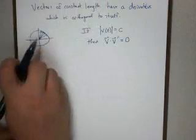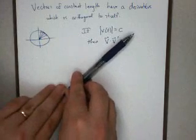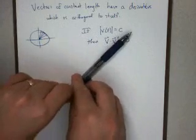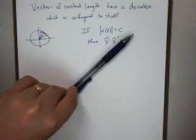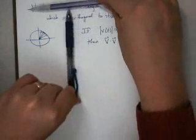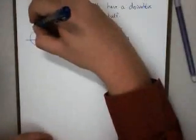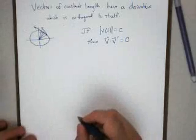then if I want to find how the vector is changing, it's going from that direction to that direction, which means the derivative happens to be orthogonal to the vector. So the derivative of that vector-valued function happens to be orthogonal to the vector itself.